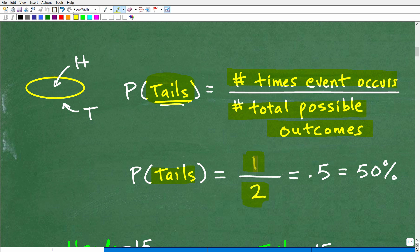So there's one way this coin can come up tails, but what's the total possible outcomes? Well, it could come up two different ways, heads or tails. That's a total possible way. So it could come out one out of two possibilities of this thing coming up tails.